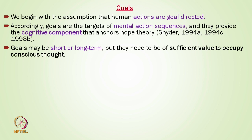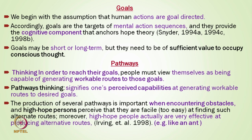There are some key factors or keywords of hope theory. The first is goals. We begin with the assumption that human actions are goal-directed, and we focus on those goal directions to achieve certain things. Goals are the targets of mental action sequences and provide the cognitive component that anchors hope theory. These goals could be short-term or long-term, but the important point is that they must have sufficient value to occupy conscious thought.